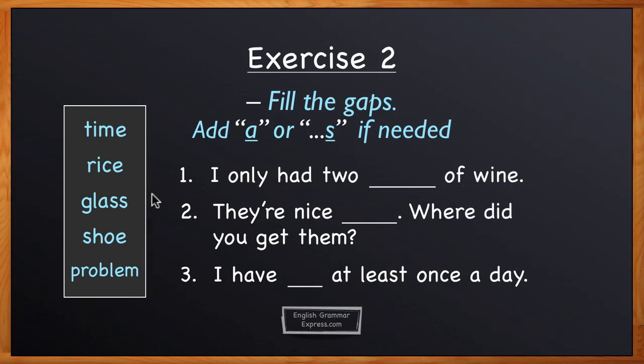From the list of words, the correct word is glass. Here we're using it after the word two, so we're going to use it in its countable sense. The full sentence is: I had two glasses of wine.